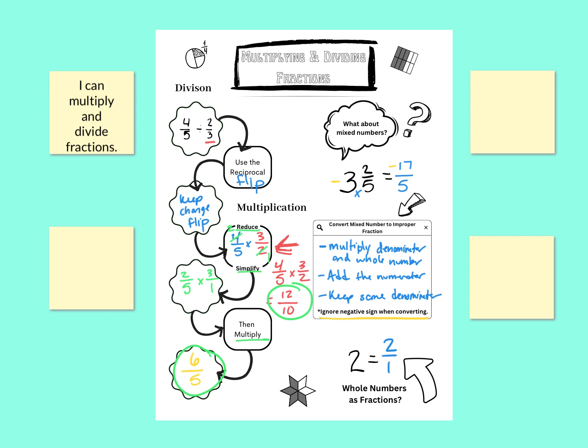Let's just look at one other quick example. If we had, say, 3 and 1 fourth times 5. So we've got a couple things going on here that I need to do. First I want to convert this mixed number into an improper. So 4 times 3 is 12, plus 1 makes 13, so that becomes 13 over 4. And then the 5 becomes 5 over 1.